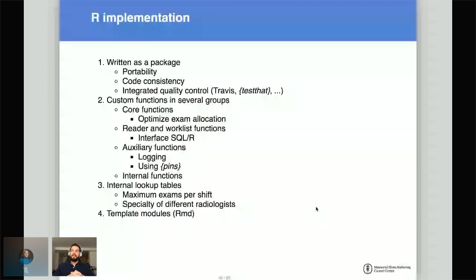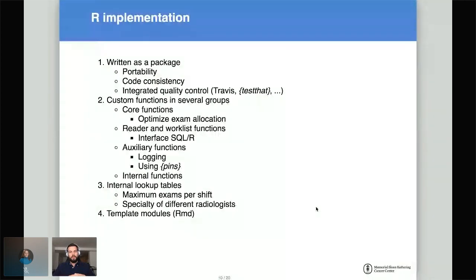A couple of details about the R implementation. We decided to write this as a package because it's portable and ensures a certain level of code consistency — we document every function — and we have integrated quality control. We used Travis and testthat to ensure everything works as it should. Our code is grouped into four different function types: core functions with the optimization algorithms implemented, functions that interface with the SQL and API systems, auxiliary functions mostly used for logging or the pins package, and internal functions that make the code more readable.